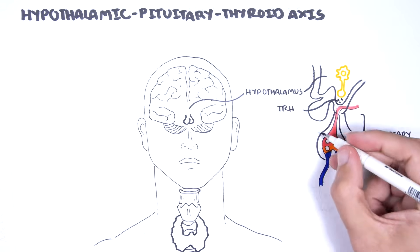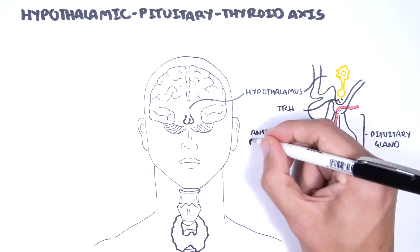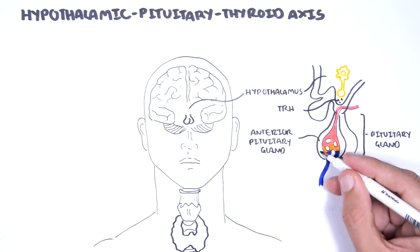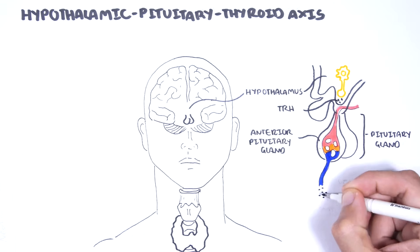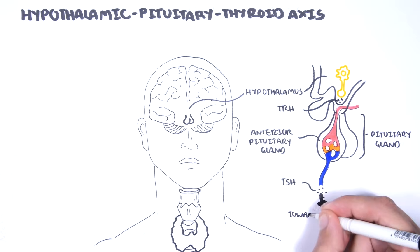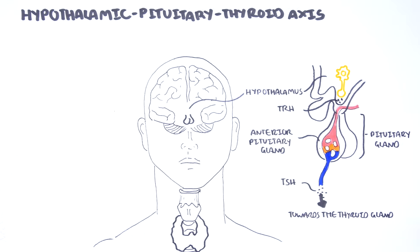TRH, which is a tripeptide, stimulates the release of TSH, thyroid-stimulating hormone, from the anterior pituitary, which in turn travels towards the thyroid gland to stimulate the synthesis and the release of thyroid hormones.